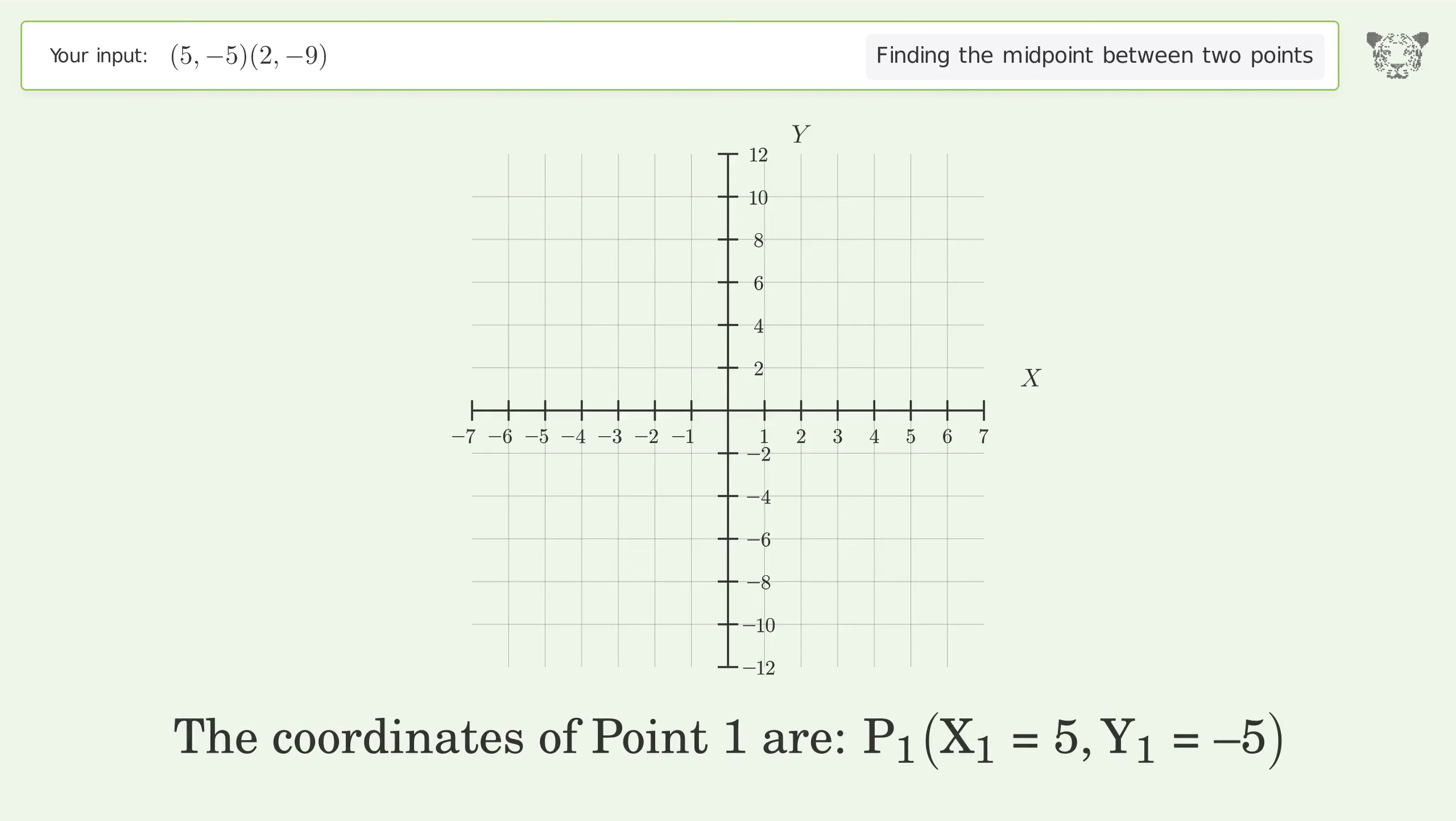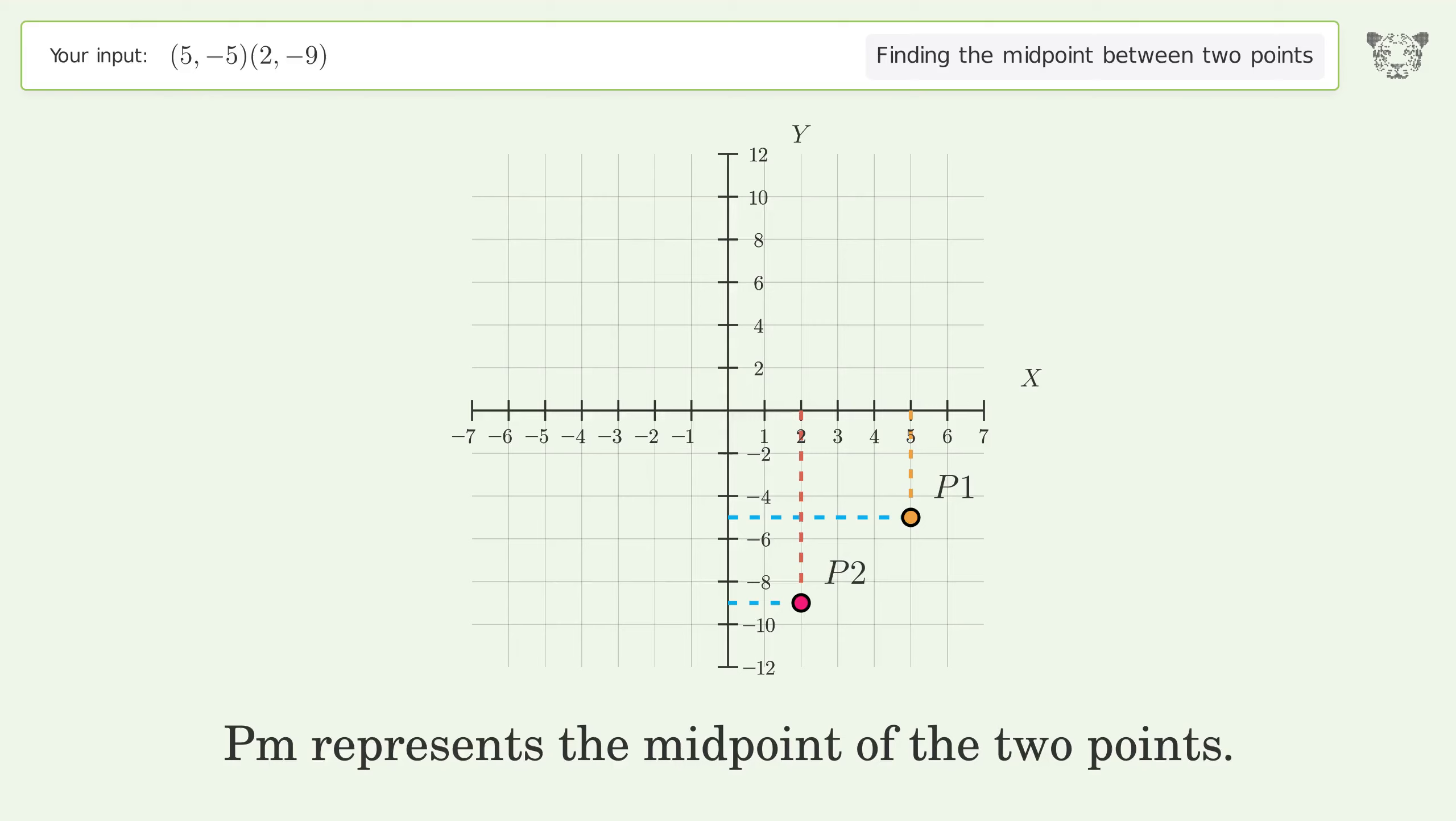The coordinates of Point 1 are: x1 equals 5, y1 equals -5. The coordinates of Point 2 are: x2 equals 2, y2 equals -9. Pm represents the midpoint of the two points.